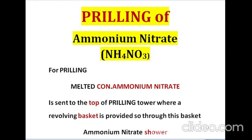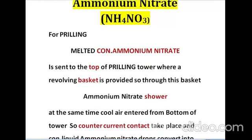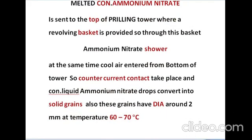Prilling of ammonium nitrate: The melted, concentrated ammonium nitrate is sent to the top of a prilling tower, where a revolving basket is provided. Through this basket, ammonium nitrate showers downward. At the same time, cool air enters from the bottom of the prilling tower. Counter-current contact takes place between the two, and the concentrated liquid ammonium nitrate drops convert into solid grains of approximately 2 mm diameter at a temperature of 60 to 70°C.